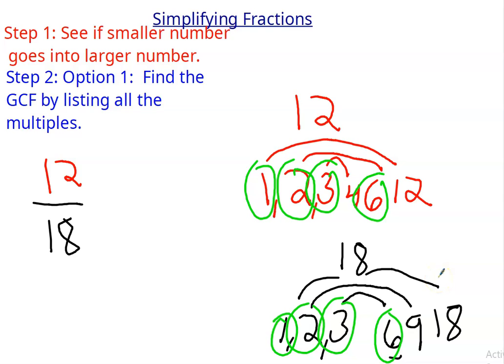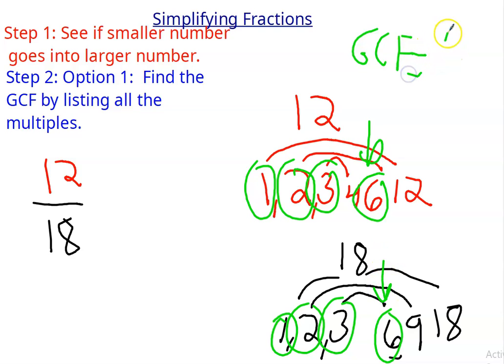My common factors are 1, 2, 3, and 6. But the one I'm really looking for is my greatest common factor, which is the greatest one they have in common, which equals 6. So I'll take my 6 and divide my numerator and denominator by 6.